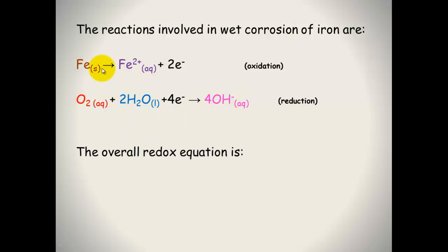So the overall redox reaction, we need to multiply the top equation by two, and then just bring everything down. Multiplying that by two will cancel out the electrons. So you'll get oxygen, two water, ions, two iron ions, and four hydroxide ions.